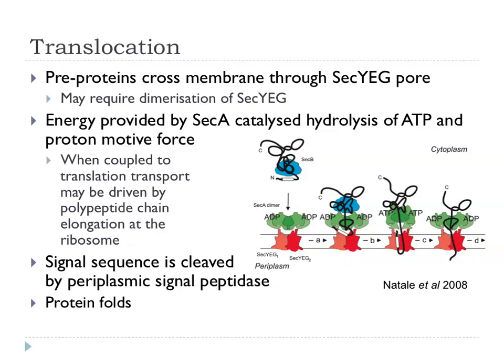SecB comes in with SecA, ATP is consumed generating ADP, and engagement with the pore drives the protein through. On the periplasmic side there is a signal peptidase that cleaves off the signal peptide as the protein comes through. Once the protein has gone into the periplasm, it is then free to fold up, adopt its native fold, and become functional. It has to stay unfolded as it threads through the pore, but after that it is free to fold up.